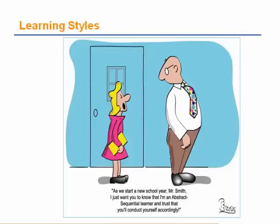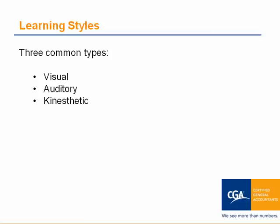The next few things I want to touch upon are learning styles. It's really good if you are able to figure out what your learning style is. As one comic puts it: 'As we start a new school year, Mr. Smith, I just want you to know that I'm an abstract sequential learner and trust that you'll conduct yourself accordingly.' So what is a learning style? A learning style is a consistent way in which a person perceives, conceptualizes, organizes, and recalls information. We have three common types of learning styles: the visual, the auditory, and the kinesthetic — some people say there's actually four, with read-write being another one. If you figure out what your learning style is — and it can be a combination of them — you can actually tailor your studying in such a way to be successful.